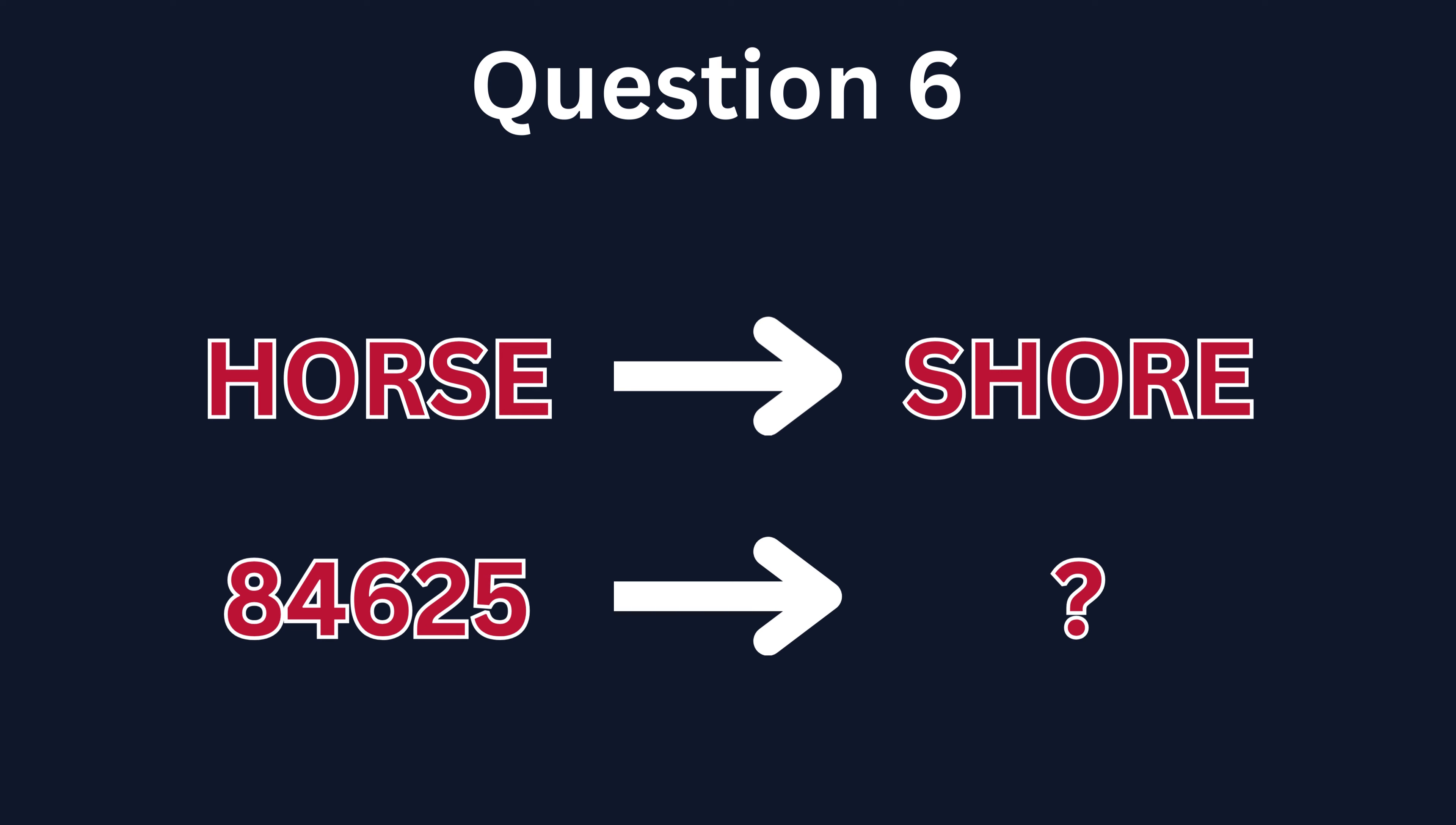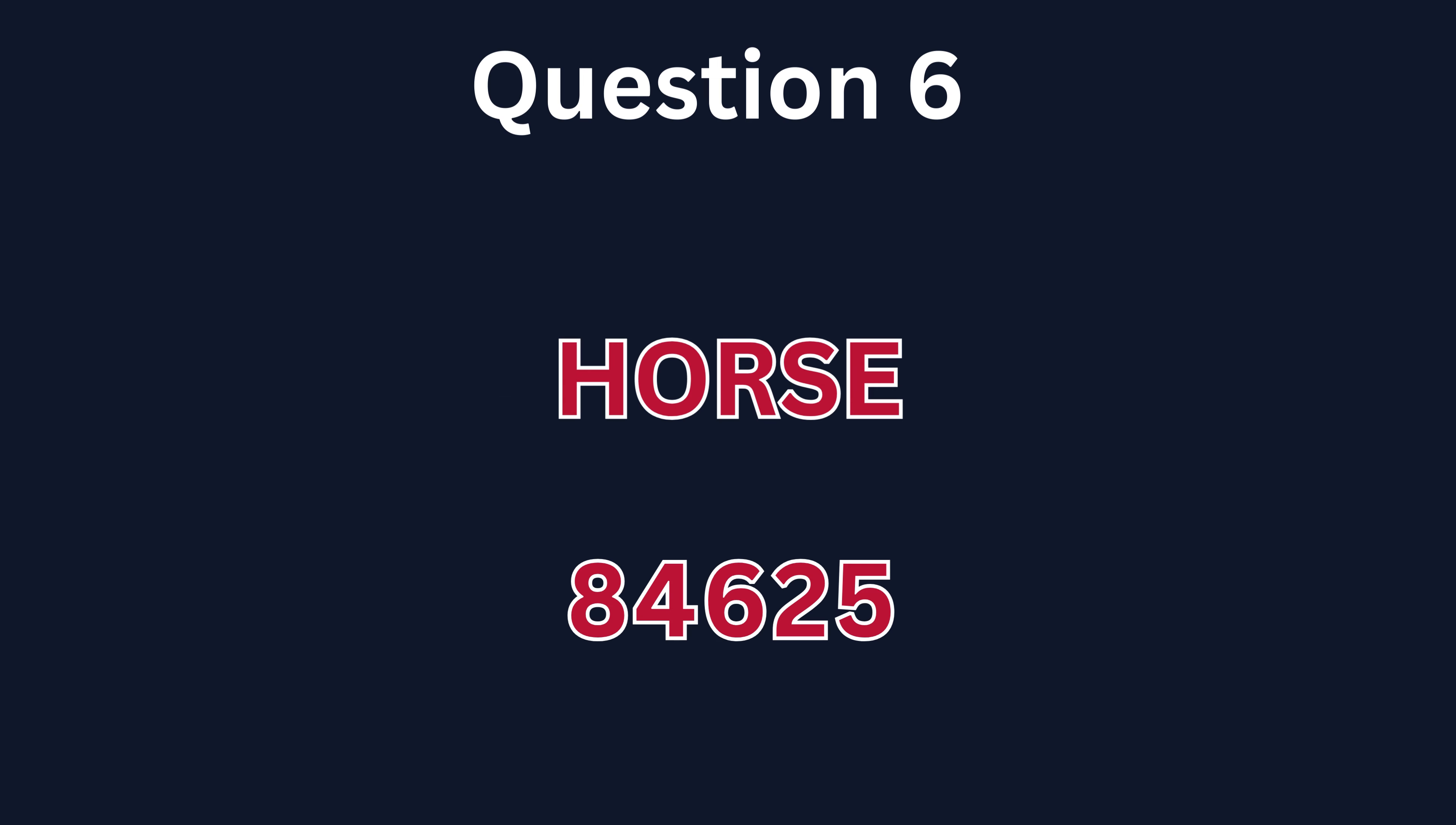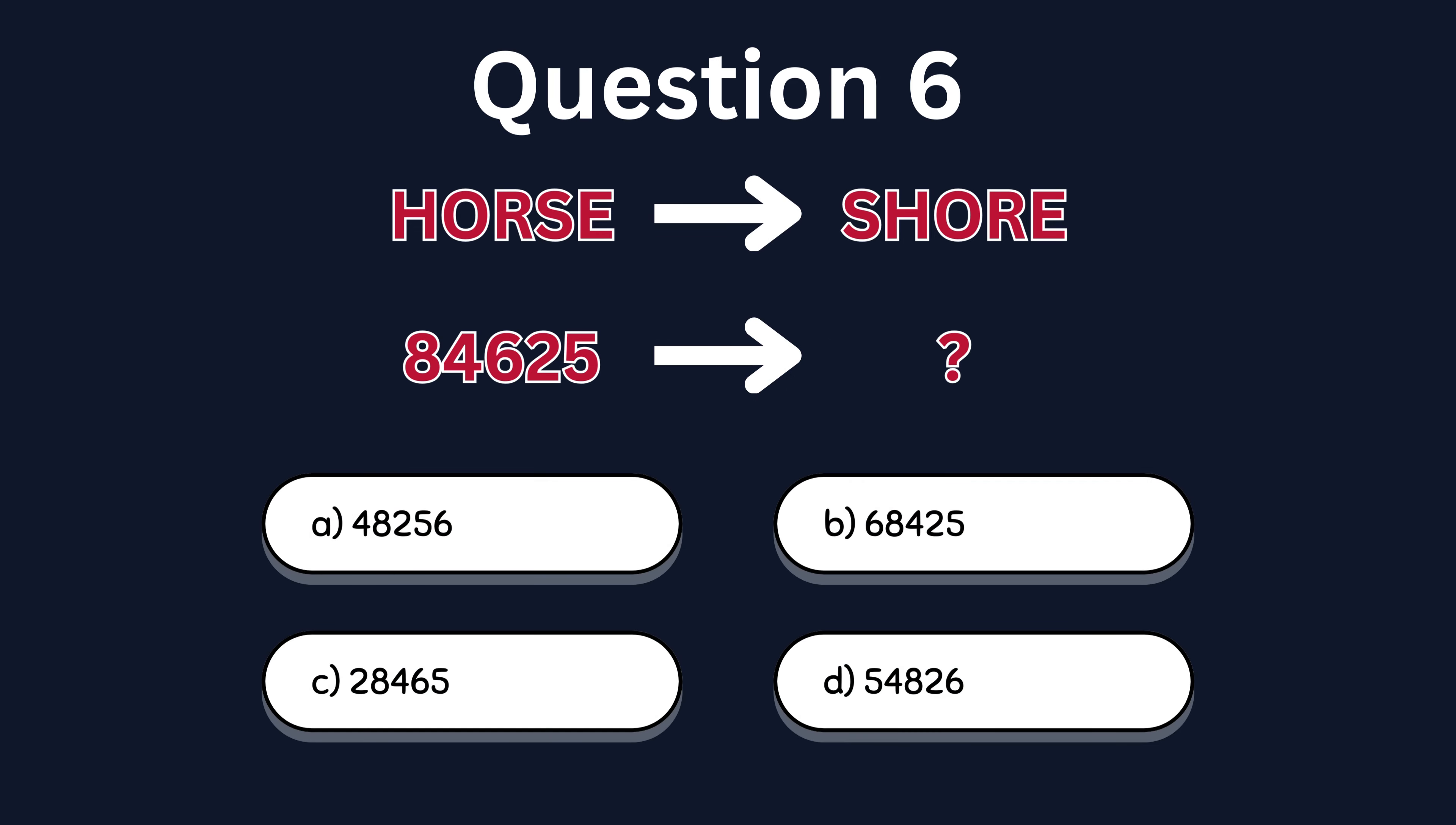To solve this riddle, you have to find the relationship between the word horse and the number 84625. Once you have done this, you will recognize that a certain number corresponds to a certain letter. So H is connected to 8, O to 4, R to 6, S to 2, and E to 5. Now arrange these numbers according to the order of the letters in the word shore. You get 28465.